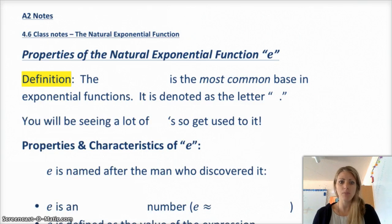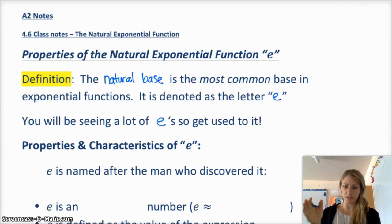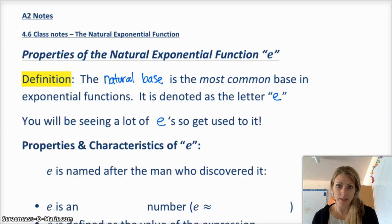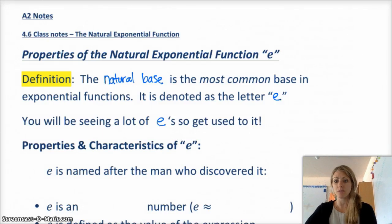Because you don't really know what e is, and I told you to just accept it for what it is right now, so we're going to talk more about what it is and what it's useful for. Properties of a natural exponential function, e. The natural base, or e, is the most common base in exponential functions. It is denoted as the letter e.